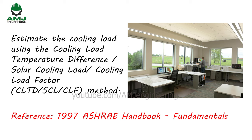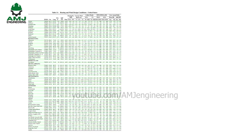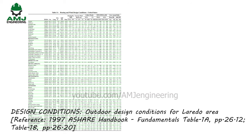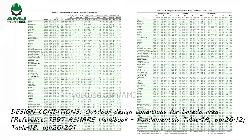We will use the cooling load temperature difference, solar cooling load, cooling load factor method — known as the CLTD-SCL-CLF method. The reference for this hand calculation method is the 1997 ASHRAE Handbook of Fundamentals. Unless otherwise noted, all tables seen through this lecture are taken from that book. The outdoor design conditions for Laredo are found in Table 1A, Chapter 26, Page 12, and Table 1B, Chapter 26, Page 20.